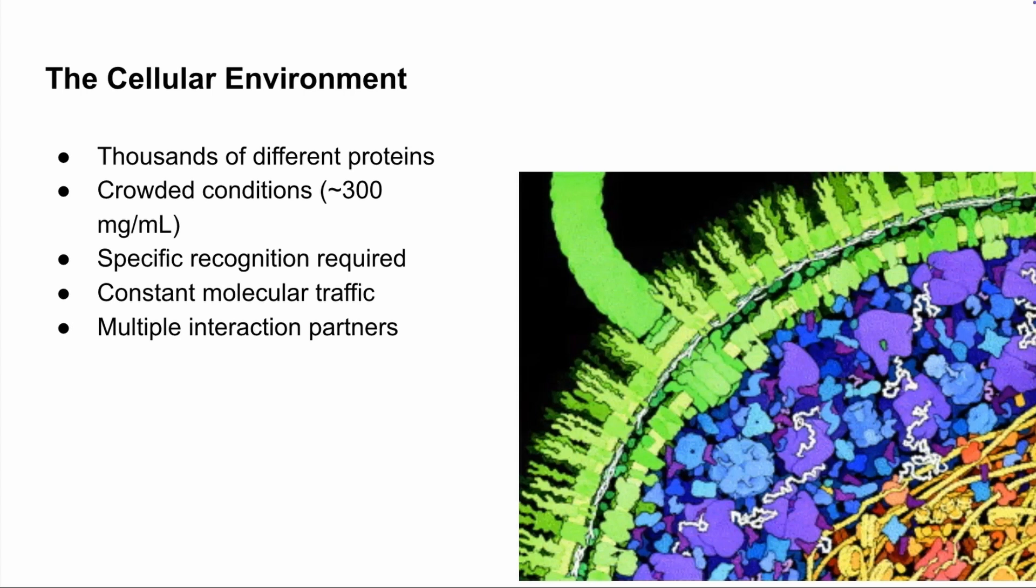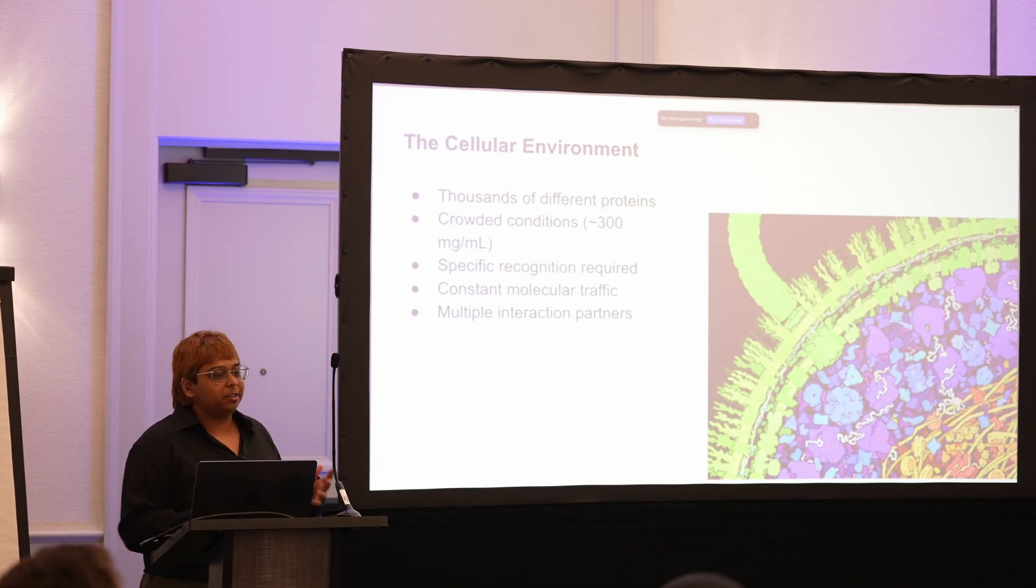And so thinking about this, protein-protein interfaces need to be very specific. They need to associate as soon as they find their partner. So how are they really doing this? That's what I want to talk about.